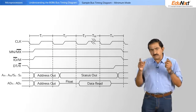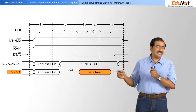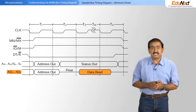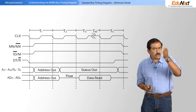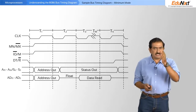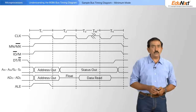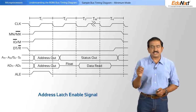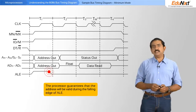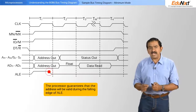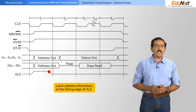Then there is a tri-state, a float condition for one clock signal, and subsequently for the remaining two clock signals the same pins carry data information — it acts as a data bus. When you want to latch the address line because the address lines are going to change their meaning, you as a designer need to latch the address lines at the appropriate time. The processor is very helpful by giving you something called the ALE signal — address latch enable. At the falling edge of the ALE pin, the processor guarantees that the address bus contains valid address information, and it is your responsibility as the designer of the system to latch address information at the falling edge of ALE.